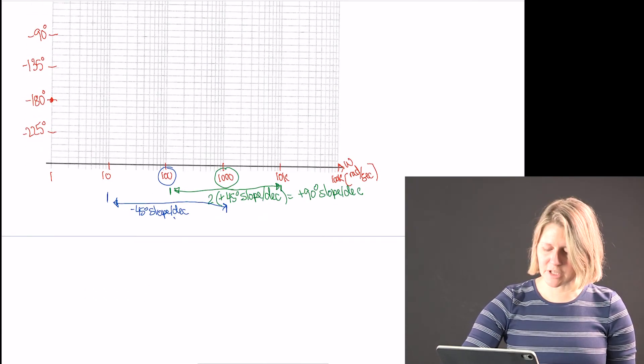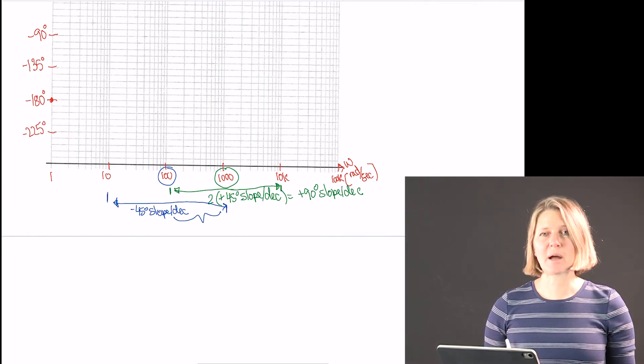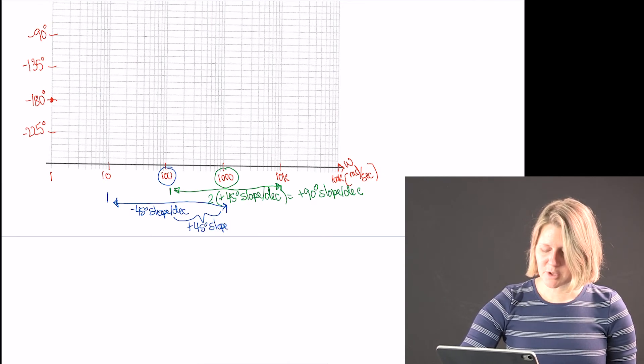There is an overlap here. And so I have plus 90 degrees minus 45 gives me a plus 45 degree slope per decade.